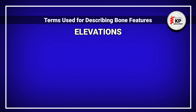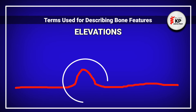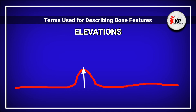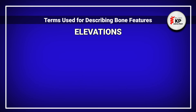The elevations are known as sudden outgrowths which are not at the same level of the surface — they are at some height above the normal surface of the bone or other structure. There are three types of elevations.